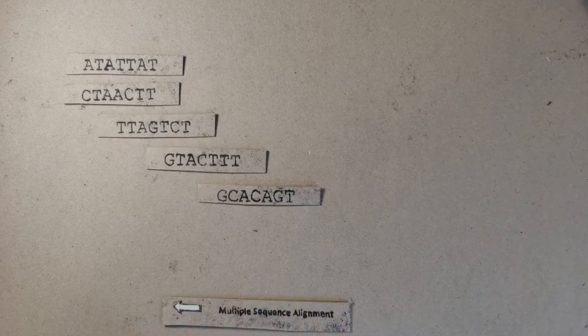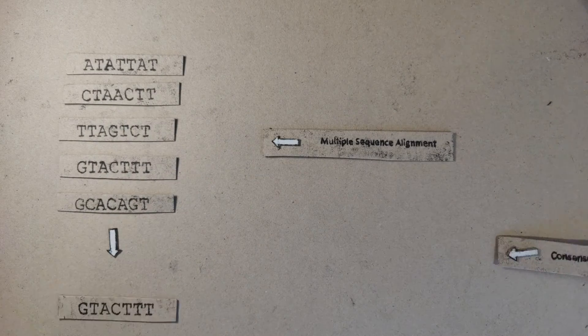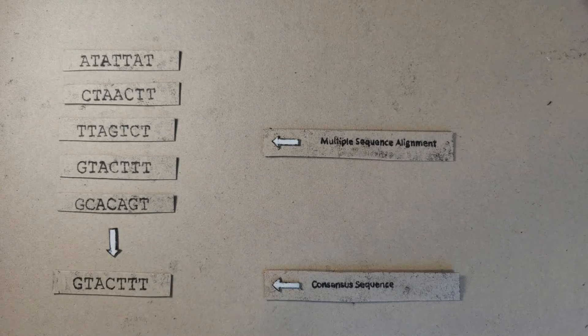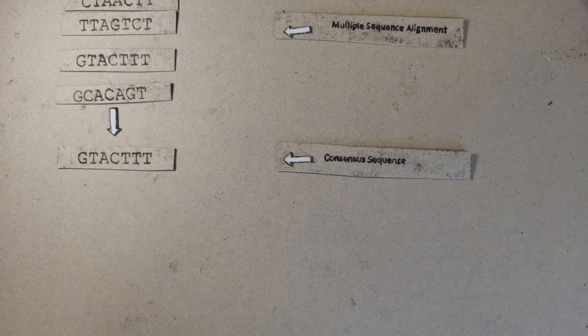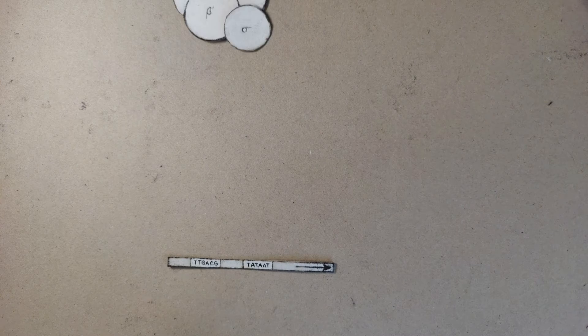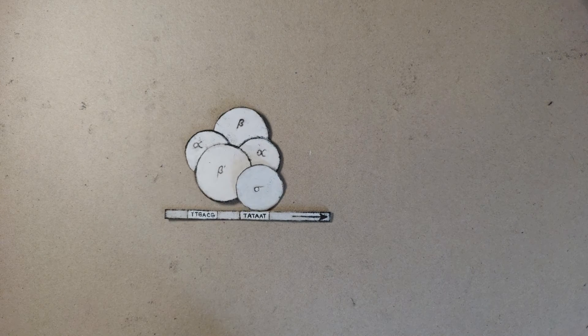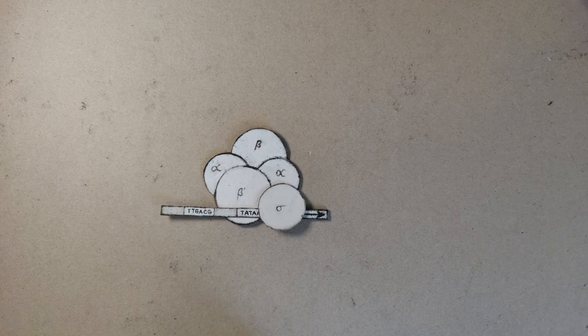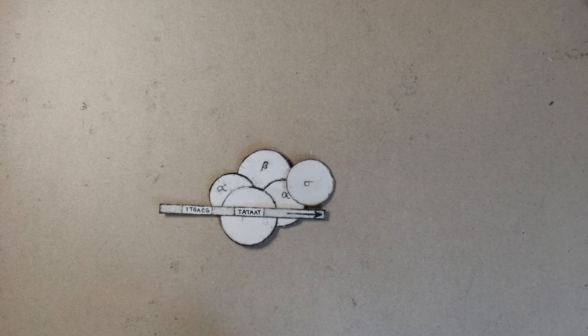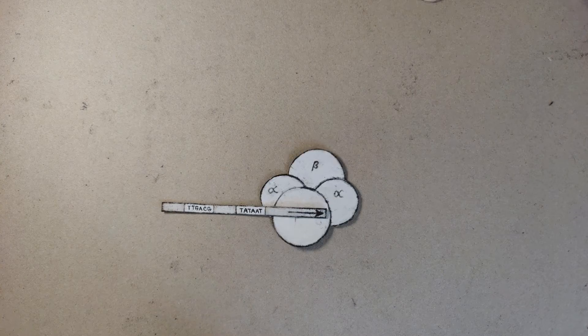All sigma factors work by recognizing core consensus sequences, binding to the promoter upstream from the start of transcription, and are released after helping RNA polymerase to melt into the site of strand separation.